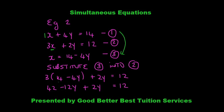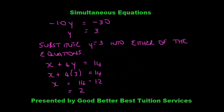So we have 3 times (14 minus 4y) plus 2y is equal to 12. Multiplying out gives 42 minus 12y plus 2y is equal to 12. Combining like terms: minus 10y equals minus 30, therefore y equals 3. Substituting y equals 3 into equation 1: x plus 4 times 3 equals 14, so x equals 14 minus 12, giving x equals 2. Therefore x equals 2 and y equals 3.